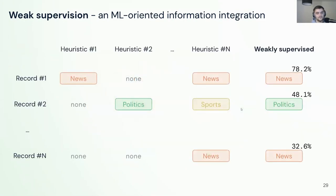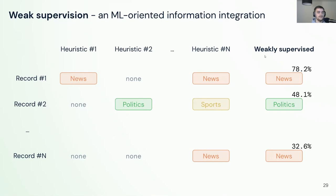Of course it wouldn't be so nicely displayed. In the end you literally just have a table with predictions and records — heuristic one predicts news or nothing, heuristic two predicts politics or nothing, some can predict multiple labels. After the weak supervision algorithm runs on these heuristics, you get a probability label, which works really well. This is an iterative approach — you label more data, explore more patterns, and keep going. This is also why we call it Refinery, because you're constantly refining your data.